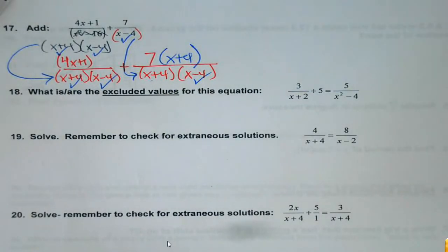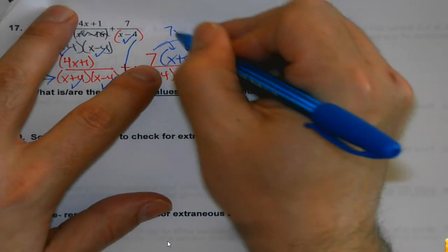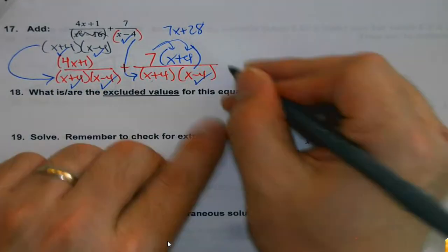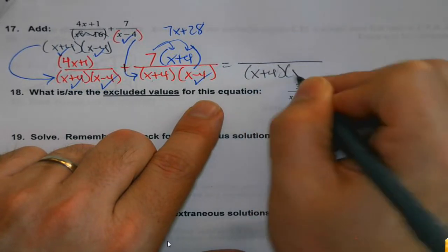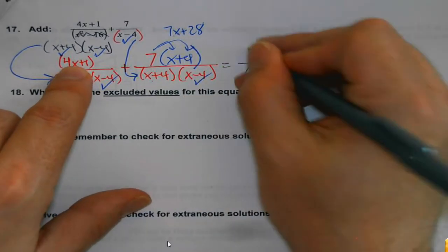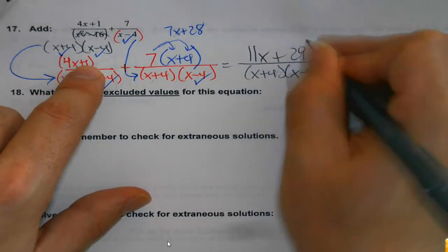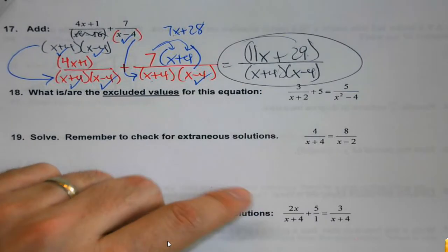If you can factor your denominator, do it. Then in fraction builder mode: check off the pieces you have — if you've got everything, you don't have to do anything else. In the first fraction there's nothing I really have to do. If I distribute in the second, I do side work without touching my denominator. Then look at like terms: 7x and 4x is 11x, 1 and 28 is 29. Does this factor? No — nothing goes into 11 and 29. That's as far as I can go.